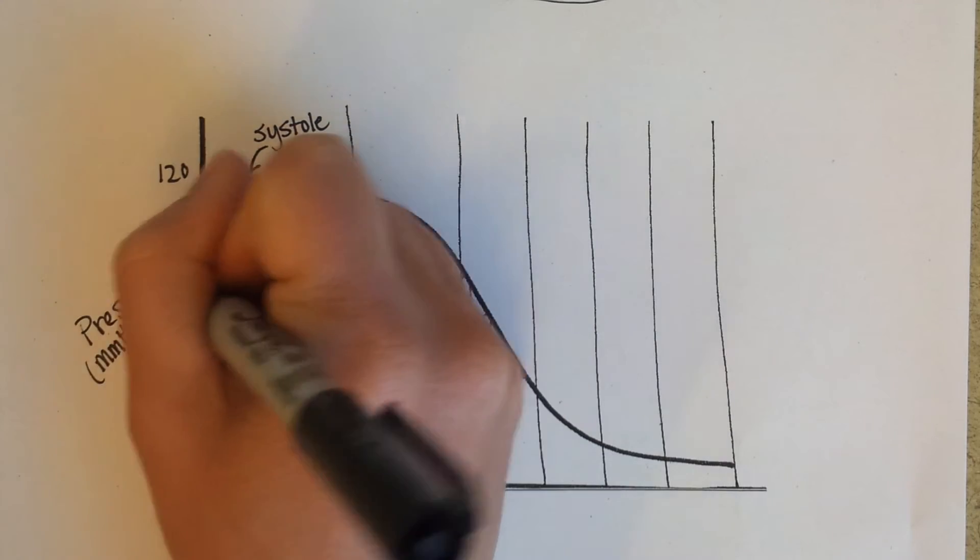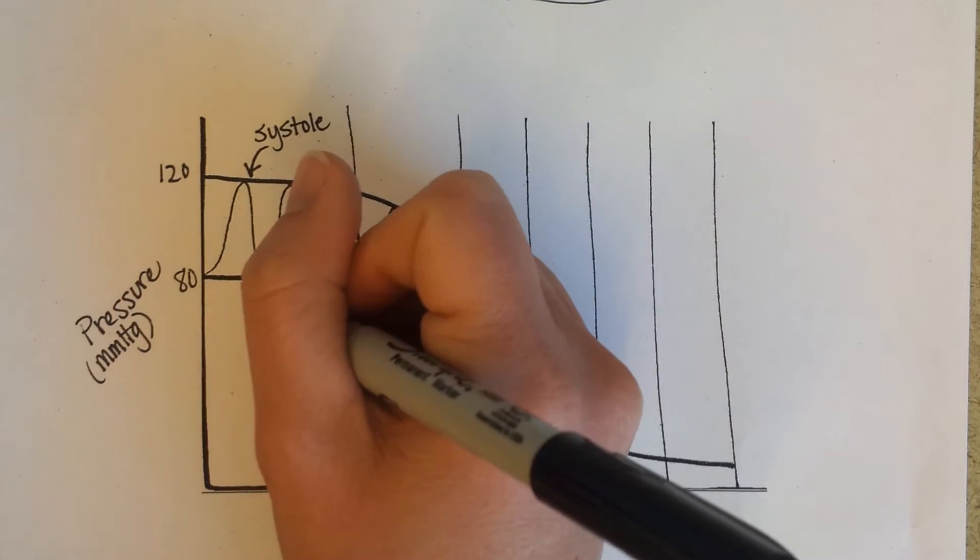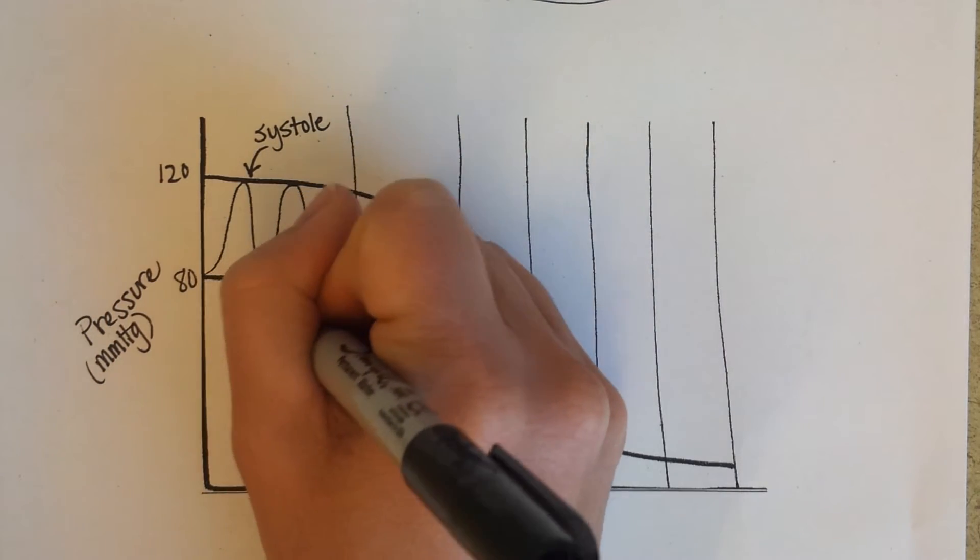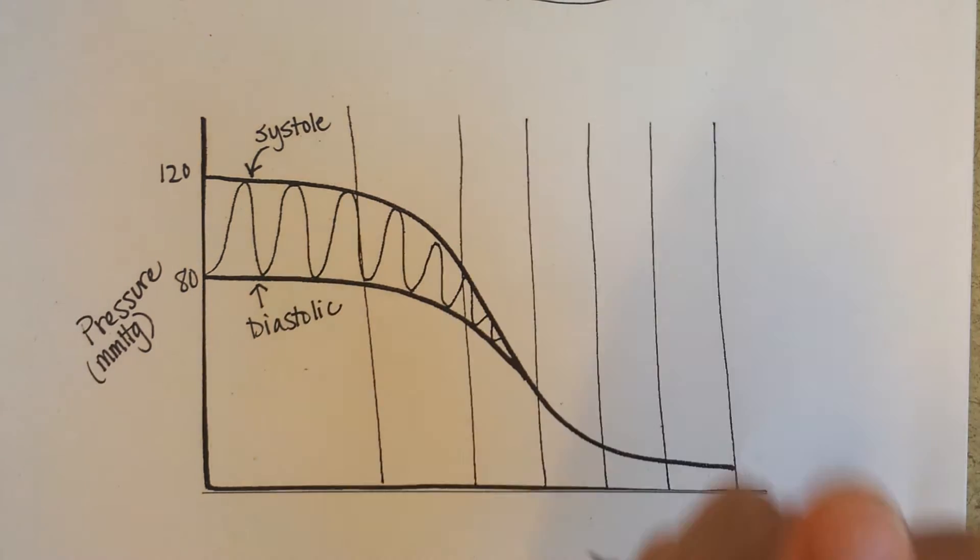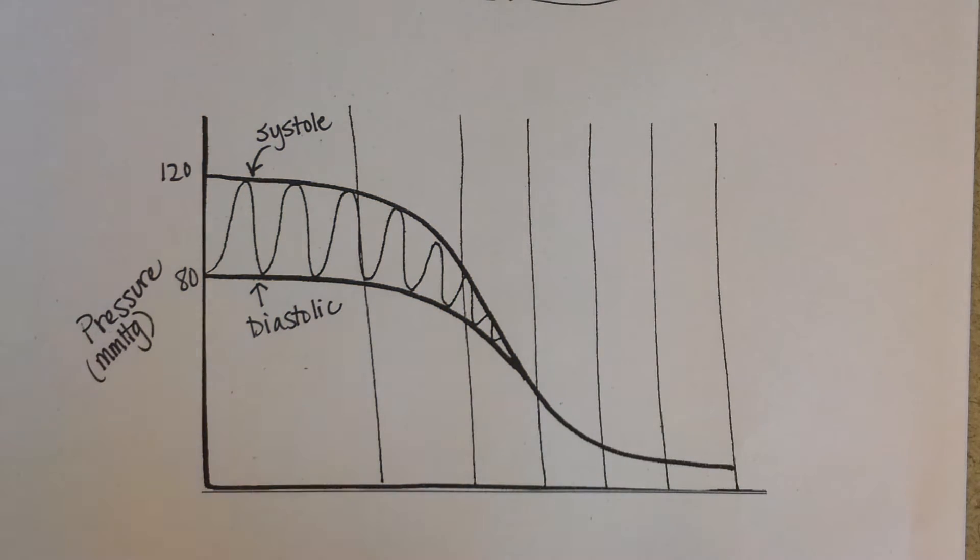And then this bottom number, 80, is the pressure that is held in the pump or in the ventricles of the heart even in between heartbeats.